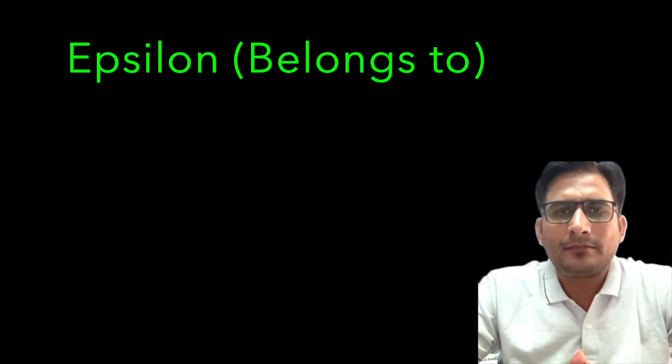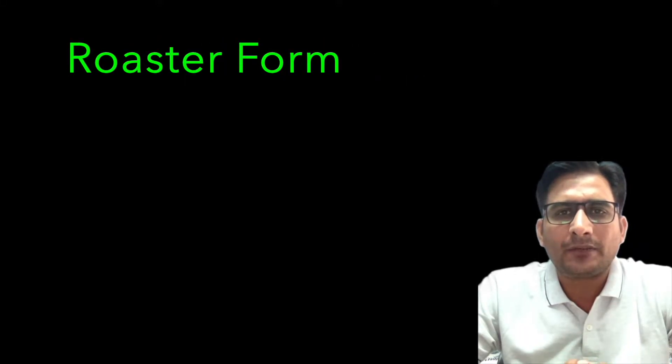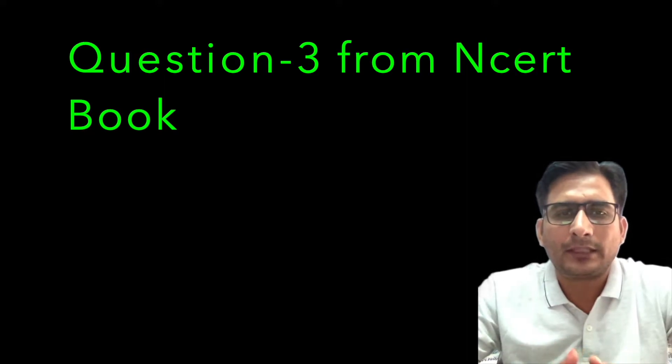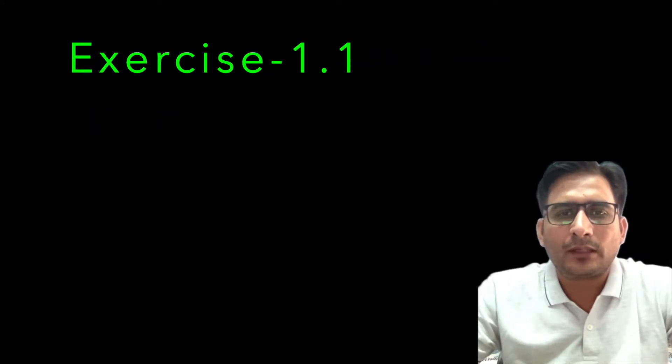In the previous class we discussed the symbol epsilon and the set builder form. We also discussed the roster form and Question 3 from NCERT book Exercise 1.1, where we had to change from roster form to set builder form. Now let's start the class with a question in which we need to change from set builder form to roster form.